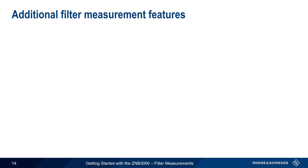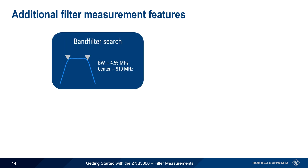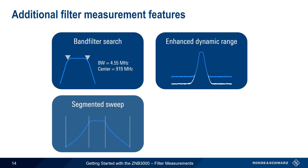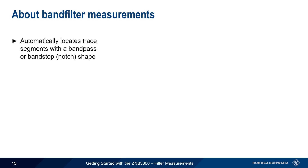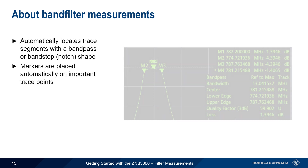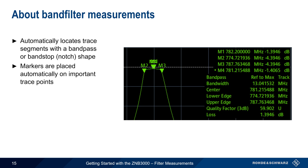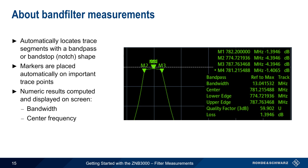Before we move on to reflection measurements, let's look at four additional ZMB3000 functions that are helpful when measuring filters: band filter search, enhanced dynamic range, segmented sweep, and averaging. The band filter search function automatically locates trace segments which have either a bandpass or a bandstop shape. It then automatically places markers on important trace points and uses these markers to calculate important filter parameters, including bandwidth, center frequency, the upper and lower edges, quality factor, and insertion loss. These values are all displayed on screen along with the marker values themselves.